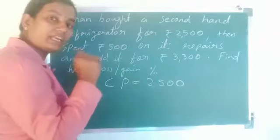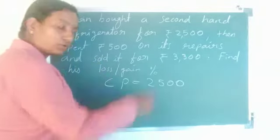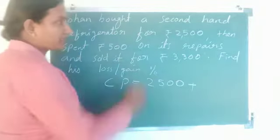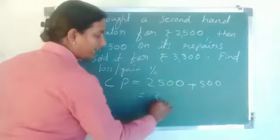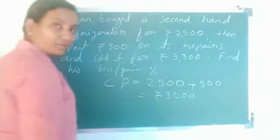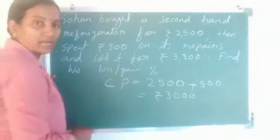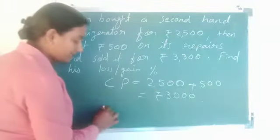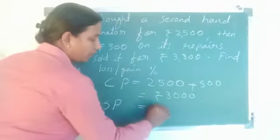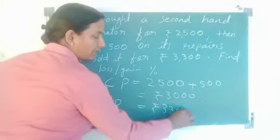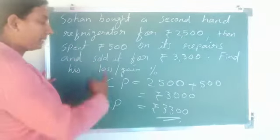He spent rupees 500 on its repairs, so this 500 rupees is additional expenses. Additional expenses are also included in the cost price. So actual cost price equals 2500 plus additional expenses 500, which is equal to 3000. And sold it for rupees 3300, meaning selling price SP is equal to 3300.